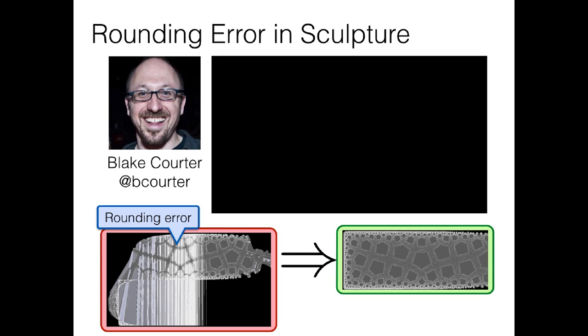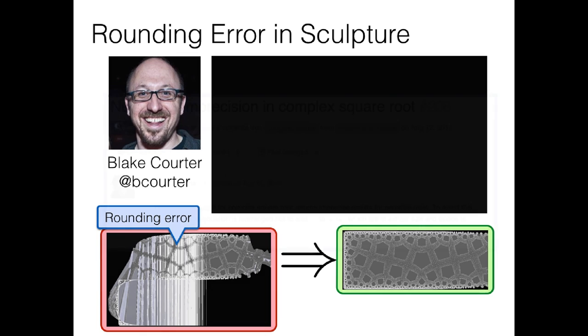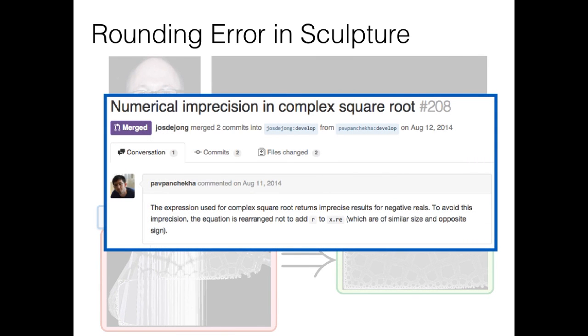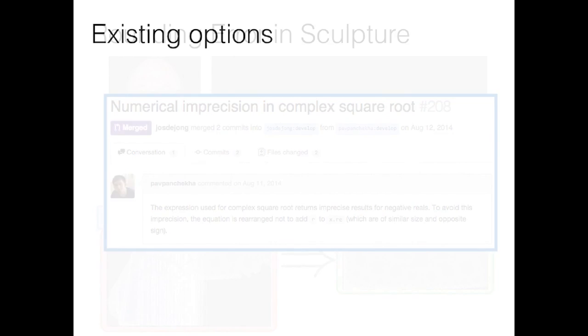And Blake's not even the only guy to run into this exact problem. We found a very similar issue in an open source math library, where Herbie's generated code was used for a patch. So what can a programmer, like Blake, do when they run into rounding error? Well, roughly speaking, they've got three options.